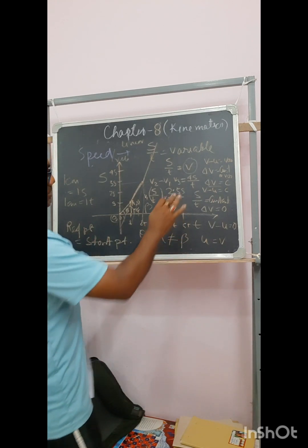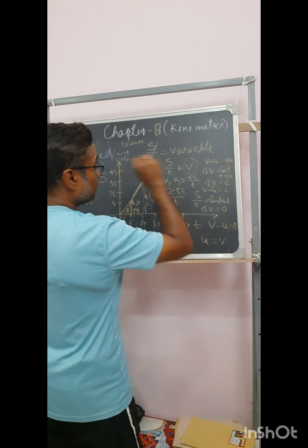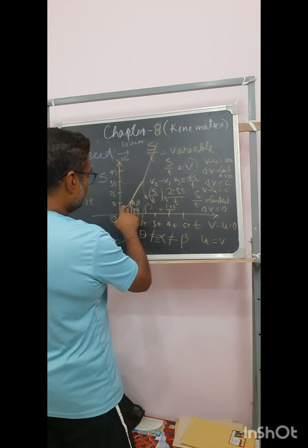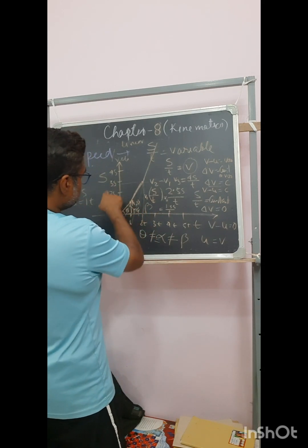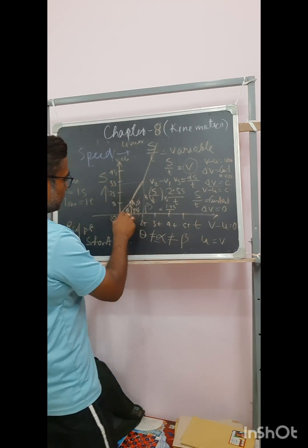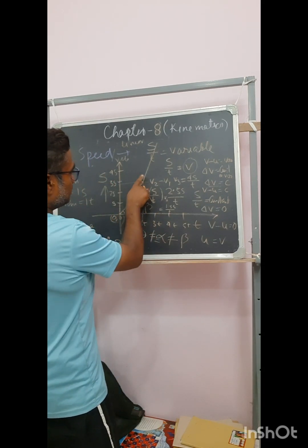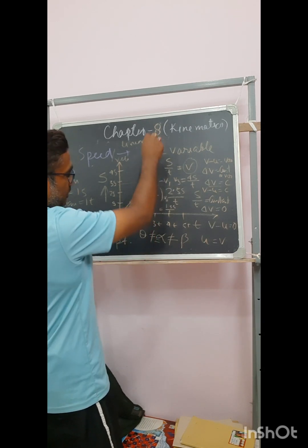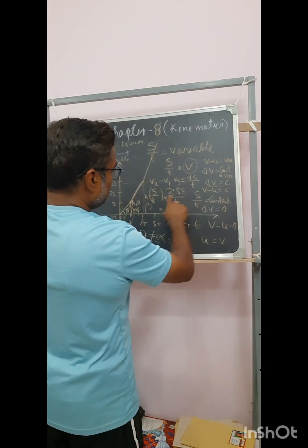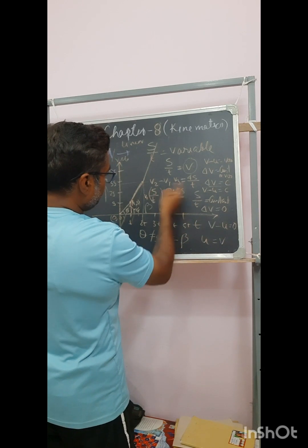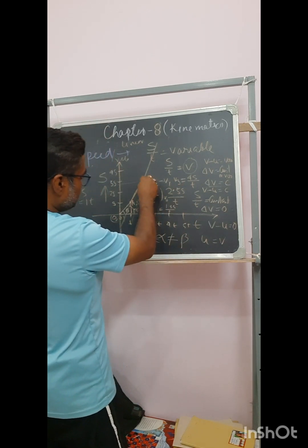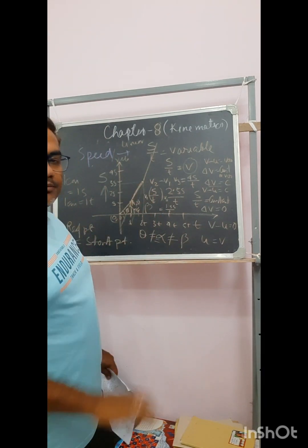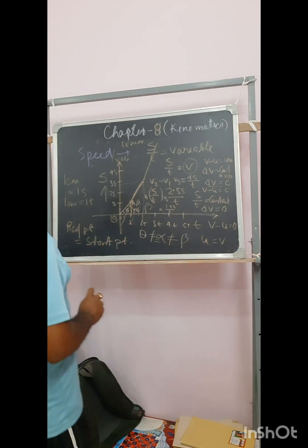So if it is constant velocity change, even though in the s by t diagram the line is deviating and the slope is differing, the difference between two consecutive velocity points is the same. That is constant velocity change.